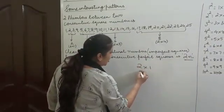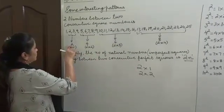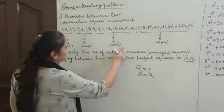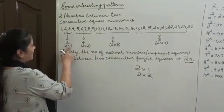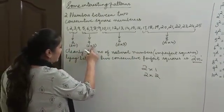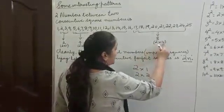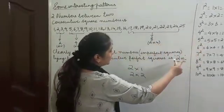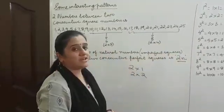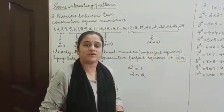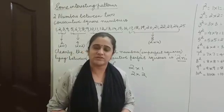So, see: 2 into n, where n is 1 gives 2; 2 into n where n is 2 gives 4; 2 into n where n is 3 gives 6; 2 into n where n is 4 gives 8, and so on. So, 2n is the expression which is used to find the number of imperfect squares lying between two consecutive perfect square numbers.